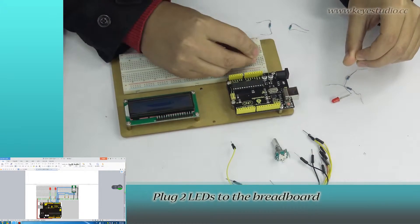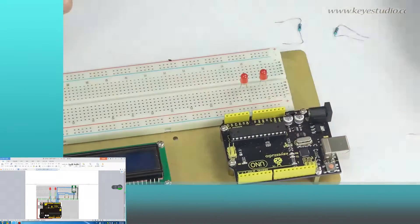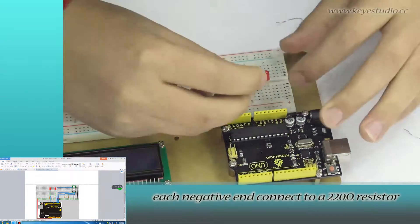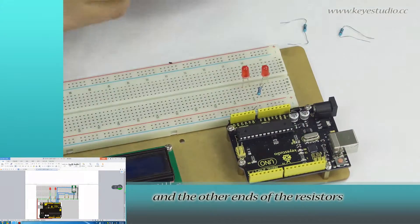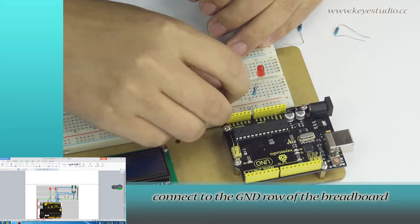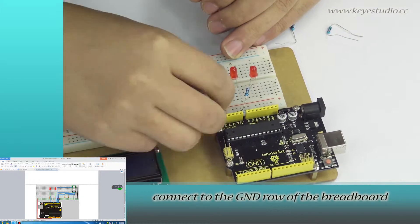Plug two LEDs to the breadboard. Each negative end connects to a 220 ohm resistor and the other ends of the resistors connect to the ground rail of the breadboard.